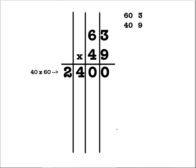After I'm done with the 40 times 60, now I'm going to take that 40 again and I'm going to multiply it times the other number that's on the top, which is 3. So I have 40 times 3.